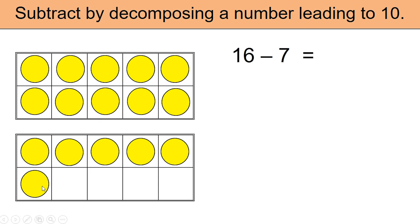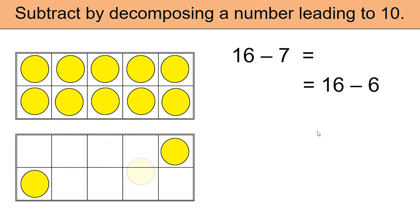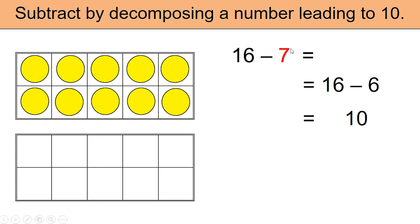Let's go ahead and remove the 6 to begin with — let's take them off the frame. We removed 6 of the counters but we needed to remove 7. Once we removed the 6 counters we got 10 left in the frame. We needed to remove 7 but we only removed 6, which means we need to remove one more, so let's remove one more from the frame.